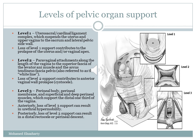Based on this discussion, there are three levels of pelvic organ support. Level one is the uterosacral and cardinal ligament complex, which suspends the uterus and upper vagina to the sacrum and lateral pelvic side wall. Loss of level one support contributes to prolapse of the uterus and/or vaginal apex.